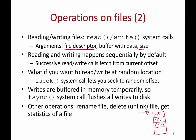By default, reading and writing happens sequentially. When you call read and get 100 bytes, the next call gets the next 100 bytes, and so on. But if you want to skip some bytes and jump to a different offset in the file, you use the lseek system call, which lets you jump to a random point in the file and start reading or writing from there. There is also the fsync system call — when you write to a file, some writes are still in memory; fsync ensures all writes are permanently stored on disk.